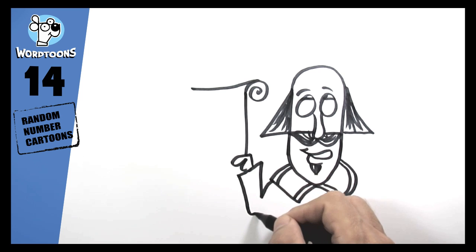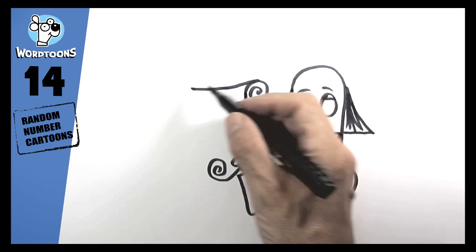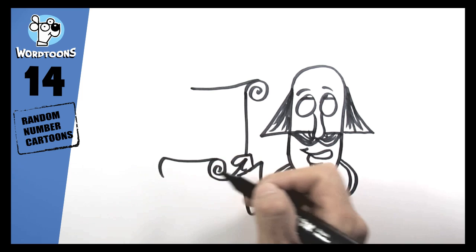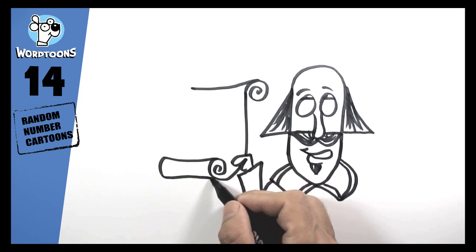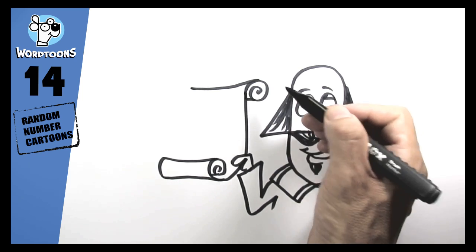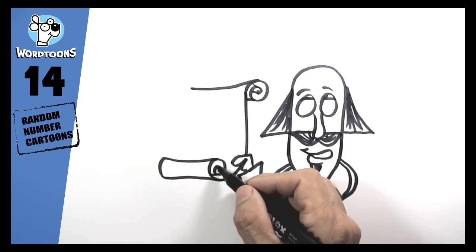Okay so why am I drawing Shakespeare with a number 14? No he didn't die or have a birthday or something to do with number 14. It's because well he wrote sonnets. A sonnet is a poem that has 14 lines and well Shakespeare wrote 154 sonnets.